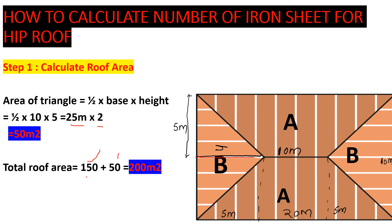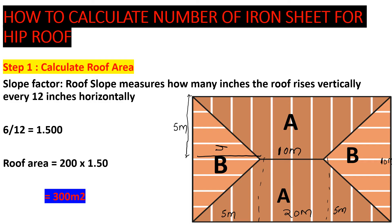Once we have the area, we incorporate the slope factor. The slope factor accounts for how many inches the roof rises vertically for every 12 inches horizontally. We are using a slope of 6-to-12, which gives a slope factor of 1.50. So the adjusted roof area = 200 × 1.50 = 300 m². This is the area we use to calculate the number of iron sheets.